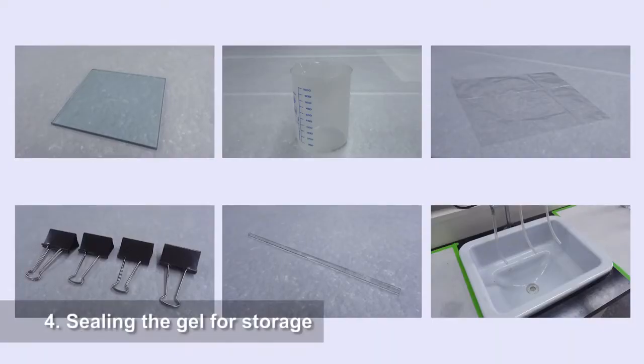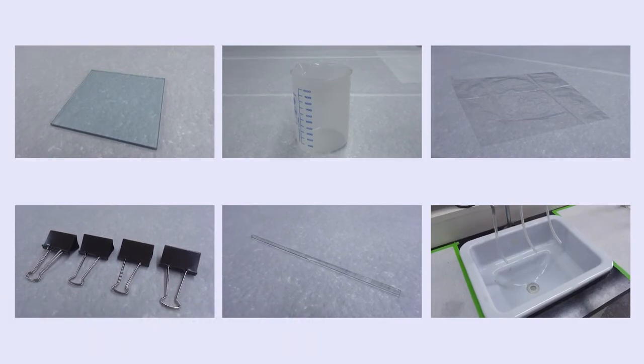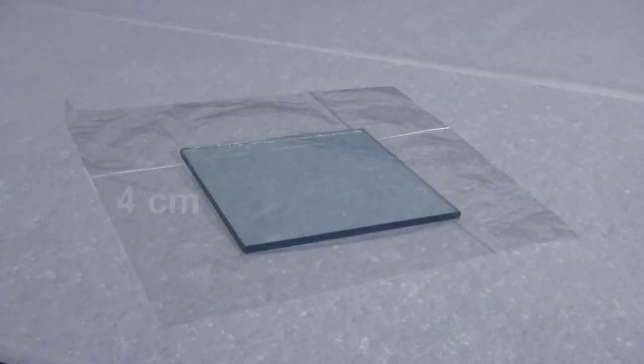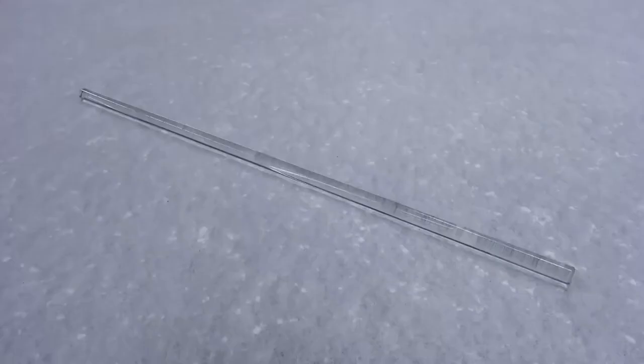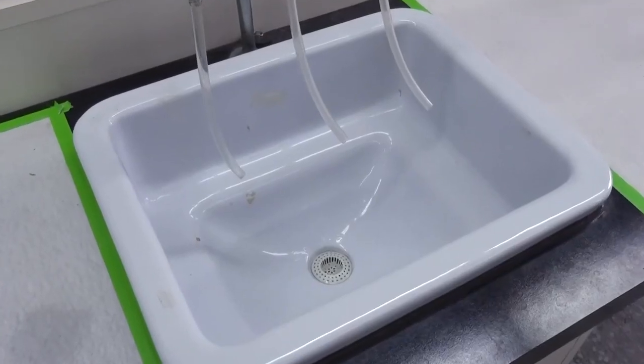4. Sealing the gel for storage. The equipment needed to seal a gel for long-term storage include a thick glass plate, a platform, two pieces of clear food wrap four centimeters wider than the glass plate on each side, at least four binder clips, a glass rod, and a sink with a tap.